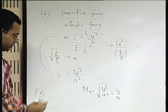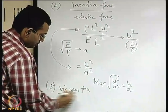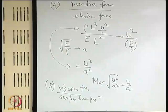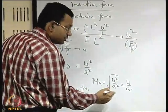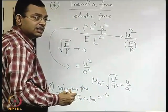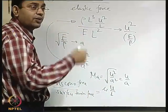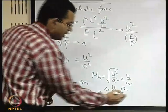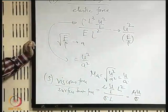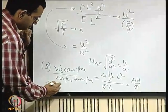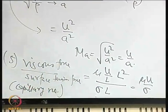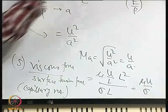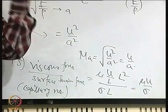The ratio of viscous force to surface tension force: viscous force scales as μ(u/L)·L² = μuL, and surface tension force as σL, giving μu/σ — known as the capillary number. In this way many non-dimensional numbers are possible; in fact hundreds exist depending on the ratios of different forces, but we have introduced some of the more common ones pertinent to an introductory course.